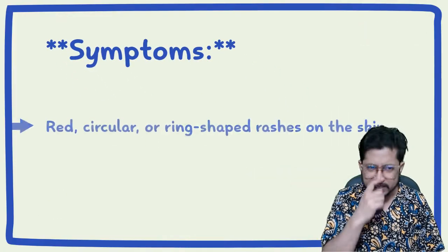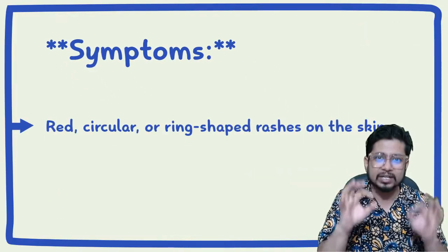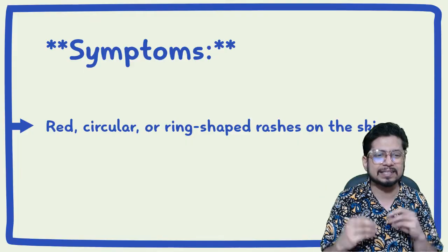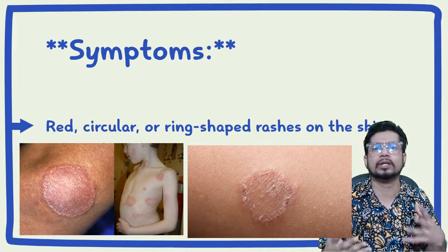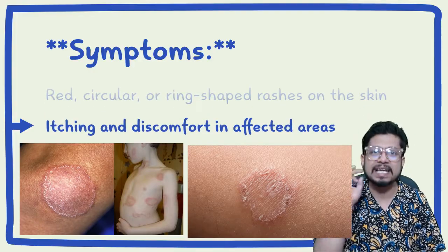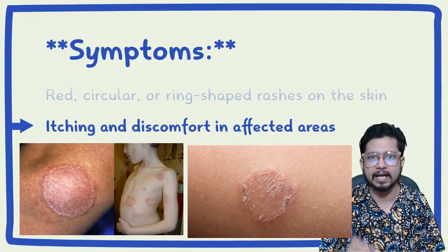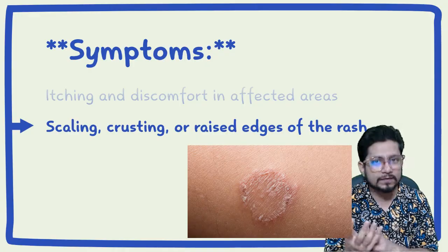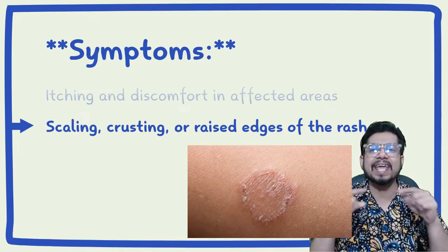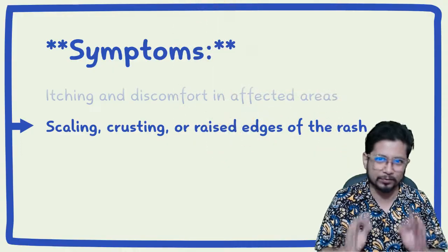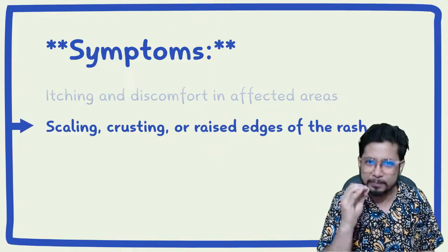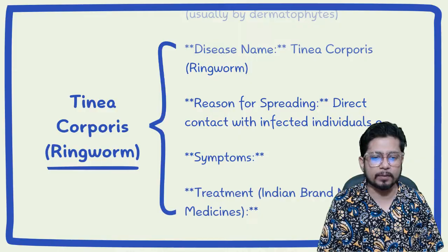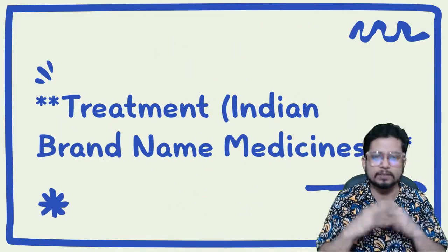The typical symptoms of Tinea corporis or ringworm infection are red, circular or ring-shaped rashes found on the surface of the skin. These rashes can be found on any part of the body, including private areas. There is itching and discomfort in the infected area, along with scaling of the skin, crusting, and raised edges over the rashes — a typical symptom of ringworm infection.